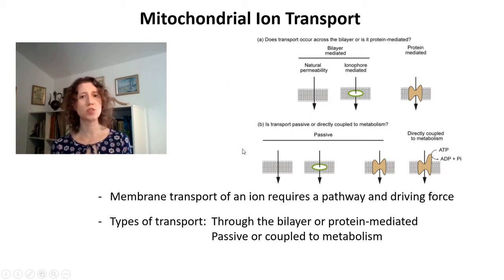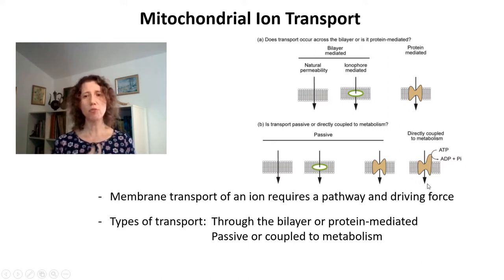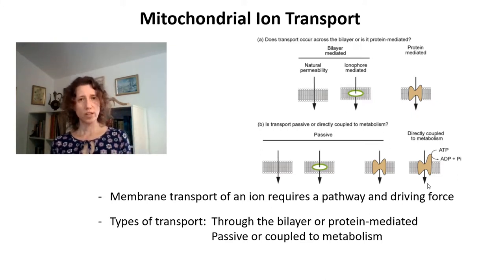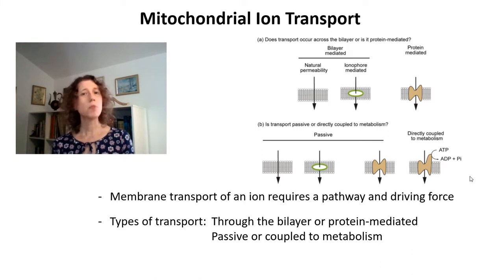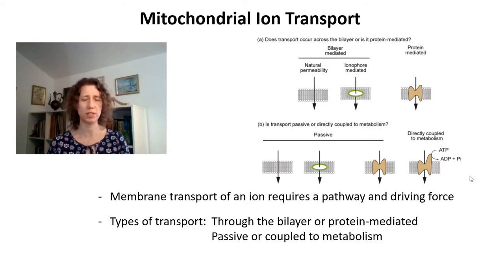Transport can be passive, simply allowing a substance to cross the membrane without concentrating it, or it can be coupled to metabolism and therefore be active transport. In other organelles, you see transport coupled to metabolism in ATPases, such as the calcium ATPase in the ER. In mitochondria, ATPases don't happen because mitochondria have the inner membrane potential as a driving force. We don't call that direct coupling to metabolism, but it is a form of secondary coupling when an ion is transported down the proton gradient.